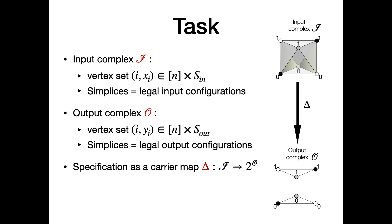Tasks can be formalized in this context as follows. We define an input complex whose vertices are pairs (i, Xi), where i is the index of the process Pi and Xi is its input. Simplices are sets of legal input configurations. For instance, in the figure with three processes receiving inputs 0 or 1 with no constraints, the input complex is homeomorphic to the two-dimensional sphere.